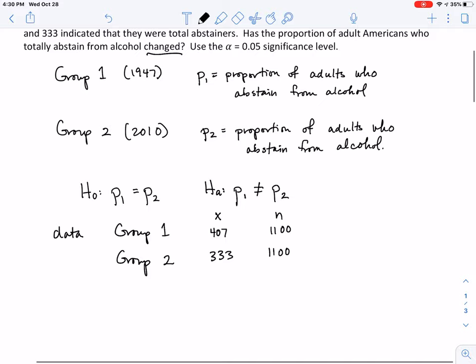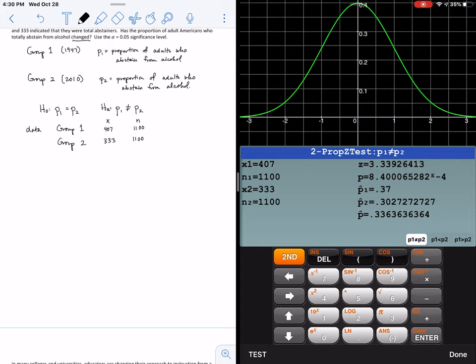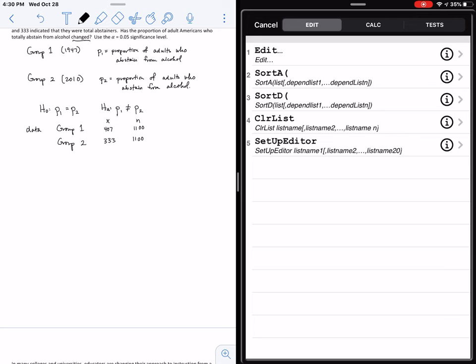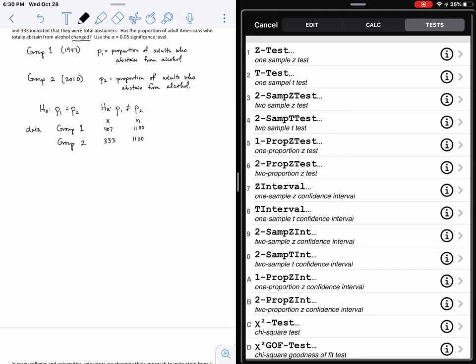So we're going to use technology to do our hypothesis test. So let's get our trusty TI. And let me get out of here. So once again, we are doing a hypothesis test. So you need to hit stat. And we are going to be doing a test. And now we are dealing with proportion.